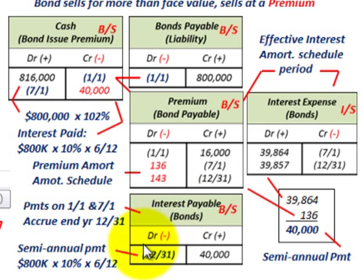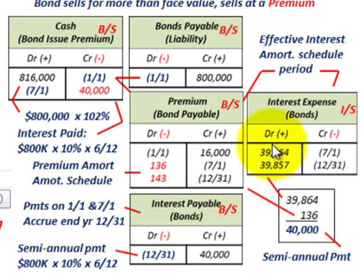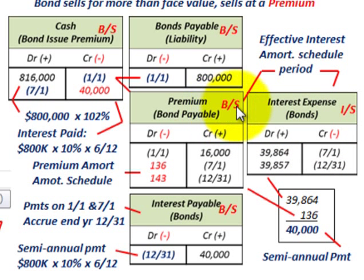For the second period, we accrue the interest payable — $40,000 again — and pull the premium amortization amount from the schedule; in this case it was $143. The interest expense on the income statement for that period is $39,857. So each period we have the $40,000 cash payment, but the interest expense recognized on the income statement is reduced by the amortization of the premium. When the bond is fully amortized at maturity, the premium account will be zero.